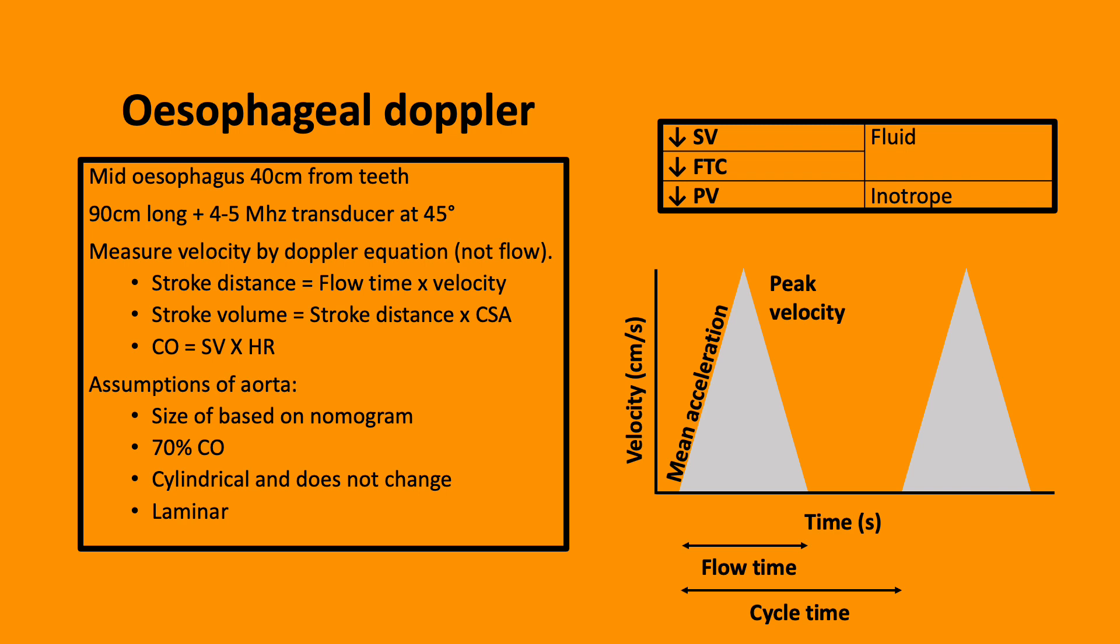Cardiac output is therefore measured indirectly by determining velocity. This is achieved by multiple equations. Firstly, by determining stroke distance, which is flow time times by the velocity. Stroke volume, which is stroke distance multiplied by the cross-sectional area. And finally, cardiac output can be determined by the stroke volume by the heart rate.